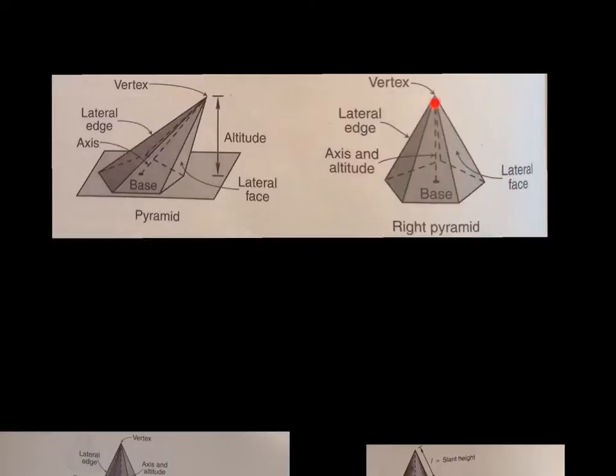We've got what's called the axis and the altitude, and that isn't always the same. You can notice over here, our axis goes from the center of the base up to the vertex. The altitude is how high it is. And when they say altitude, they're talking about how high it is from using a right angle to make that determination. See they did that here, we've got a right angle here. So the altitude and the axis are the same in a right pyramid.